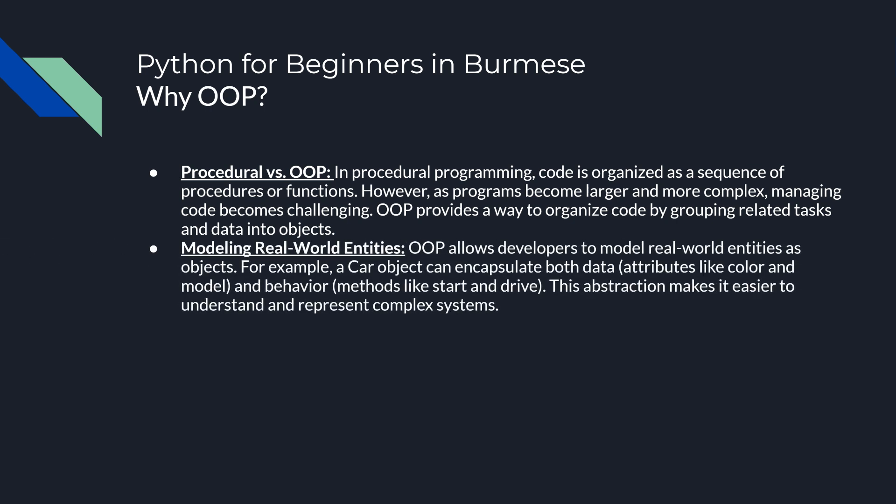Modeling real-world entities: OOP allows developers to model real-world entities as objects. For example, a car object can encapsulate both data attributes like color and model, and behavior methods like start and drive. This abstraction makes it easier to understand and represent complex systems.